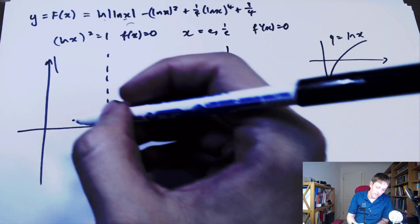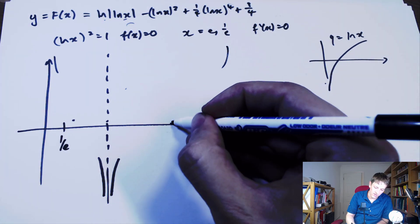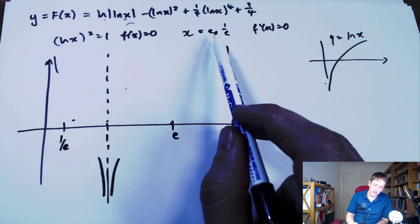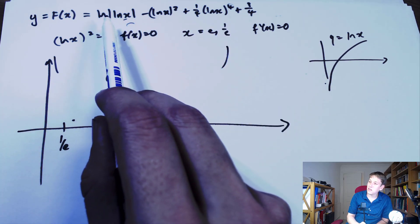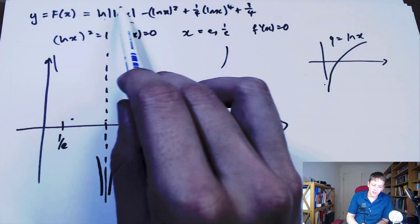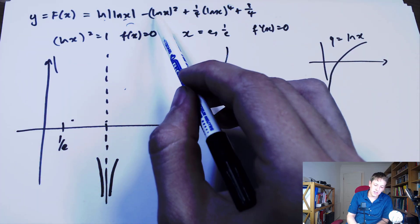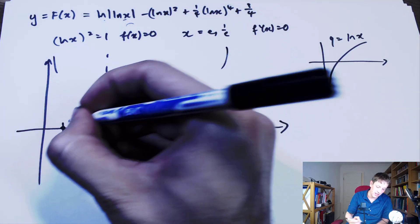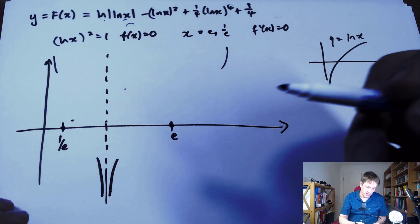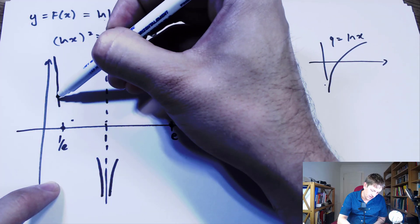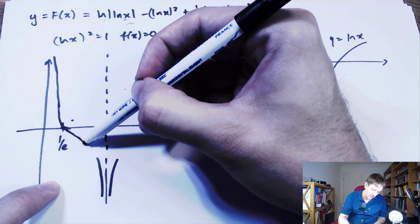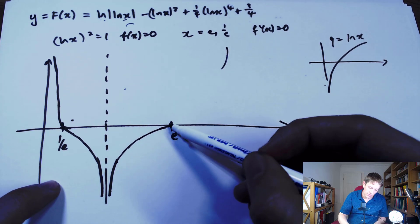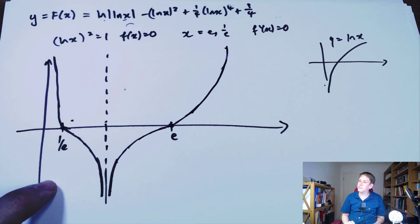We also have extra information: at x = 1/e and x = e, the graph has a turning point. Substituting these into capital F, log(1/e) = −1 or log e = 1, so log|log x| = log 1 = 0; then −(±1)² + (1/4)(±1)⁴ + 3/4 = −1 + 1/4 + 3/4 = 0. So capital F itself is 0 at these turning points. Since the graph goes from +∞ to −∞ then back to +∞, these must be inflection points with zero slope rather than local extrema.